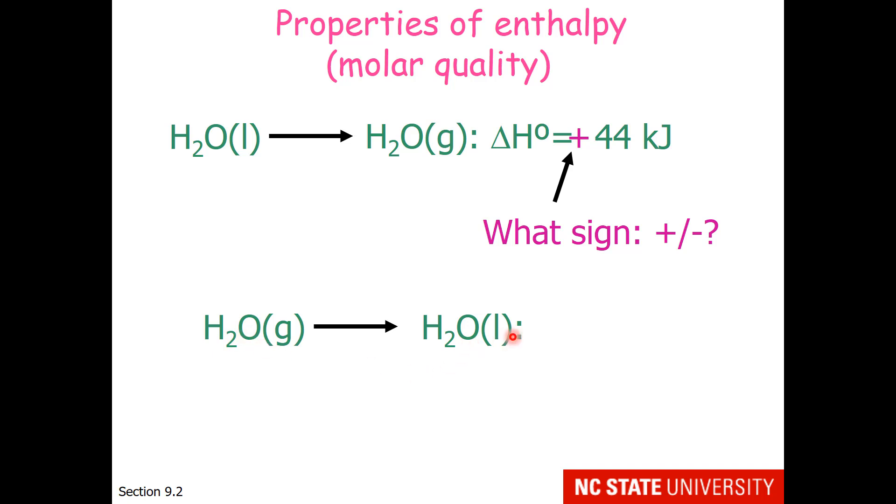If we think of water in the gas phase condensing to water as a liquid, that is the exact opposite process. So the enthalpy change is exactly the same numeric value, but opposite in sign. This reaction represents the value for 1 mole of water. If you were to have 2 moles of water condensing, then we would simply double the enthalpy change to minus 88 kilojoules.